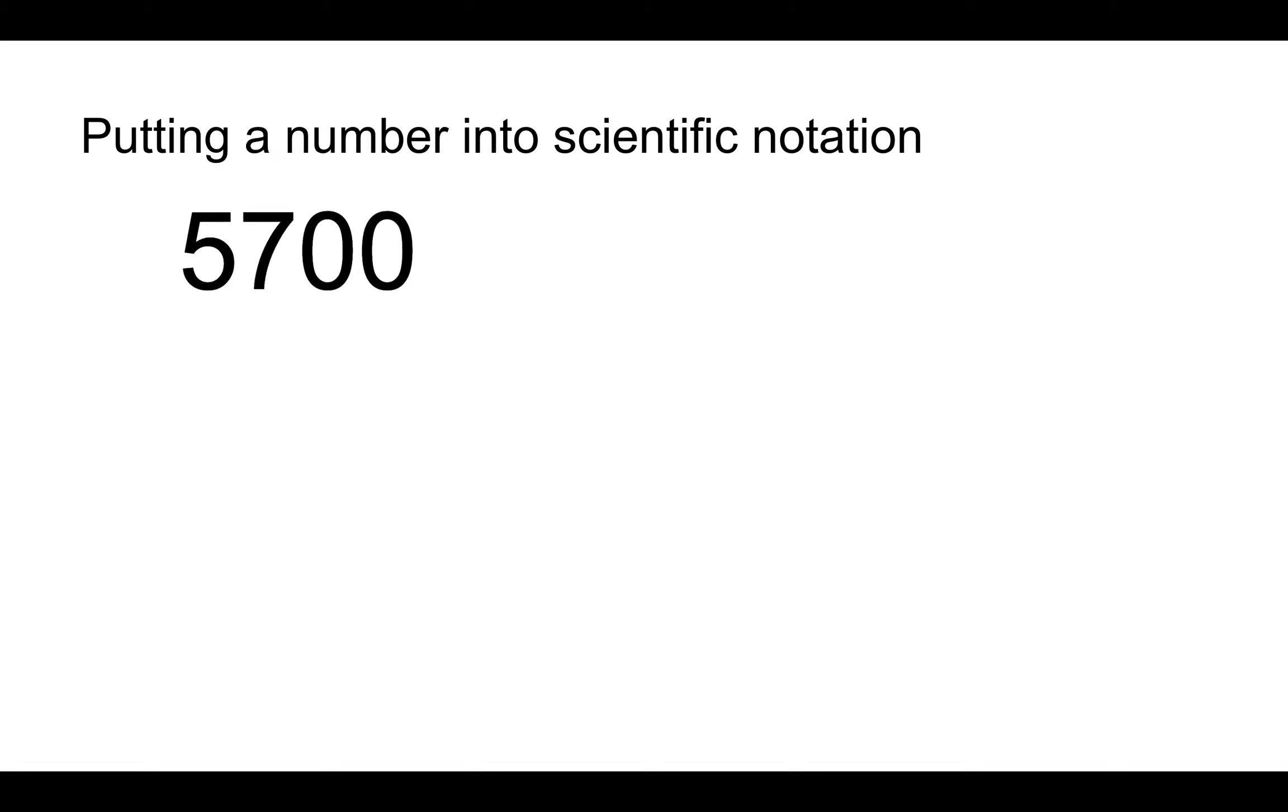So let's take a number and let's put it into scientific notation. The first thing we need to do is we need to move the decimal point over to make the beginning of the expression between 1.0 and 9.9. How we do that is we go over like this.